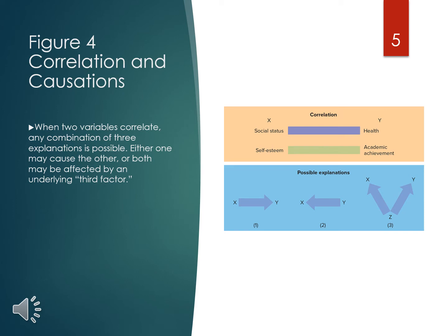In this example, you can see the correlation between social status and health, and self-esteem and academic achievement. But in the blue box, there are other factors that could influence this — the arrows go in different directions because there are other things that could influence the relationship. So there are correlations, but not a causation, because there are other underlying effects.